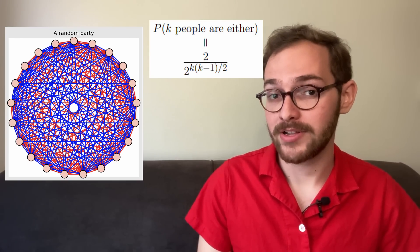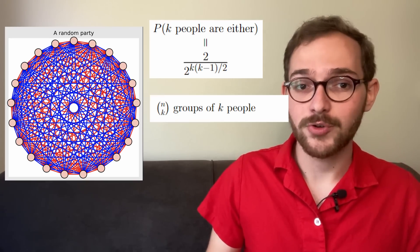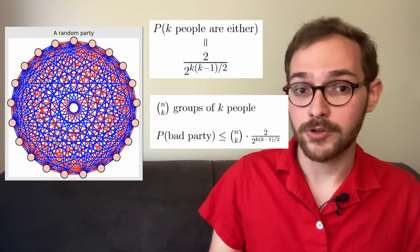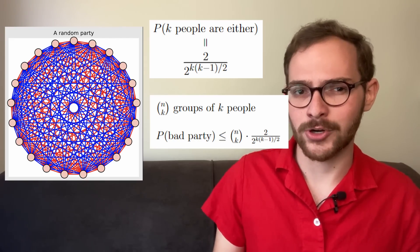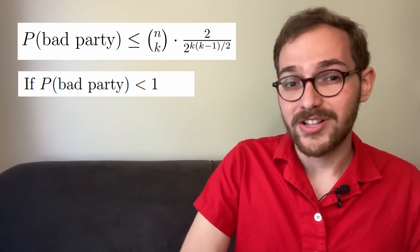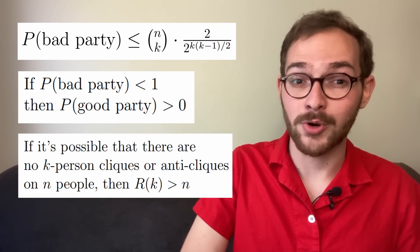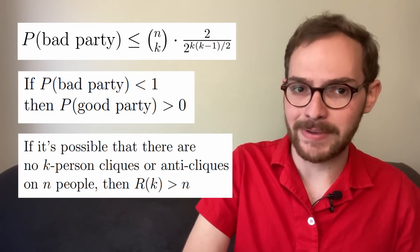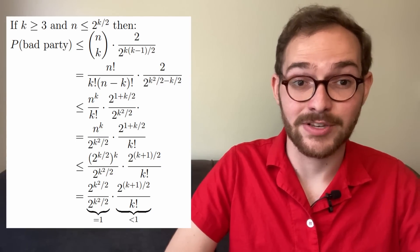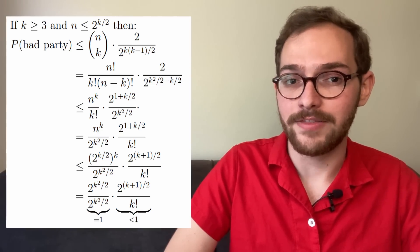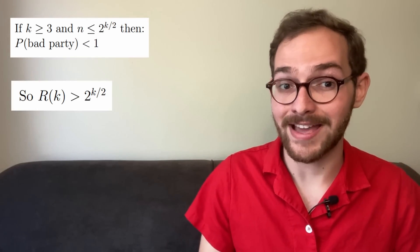If you have a bunch of events, the probability that at least one of them happens isn't bigger than the sum of their probabilities. Here, we have n-choose-k possible groups of k people, so the probability that any of them is a clique or anti-clique is less than n-choose-k times our earlier formula. But if the probability that there's such a group at all is less than 1, then there must be some positive probability that there are no cliques or anti-cliques, meaning that r of k is bigger than n. With a little algebra, we find that if k is at least 3 and n is less than 2 to the k over 2, then this probability is less than 1, meaning that r of k is at least 2 to the k over 2.